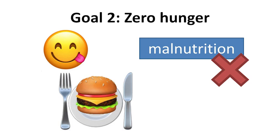Furthermore, the goal aims to double the productivity and income of small-scale food producers. This can be done by promoting sustainable food production and adding resilience in agricultural practices. Furthermore, to enhance food security, the genetic diversity in food should also be increased.